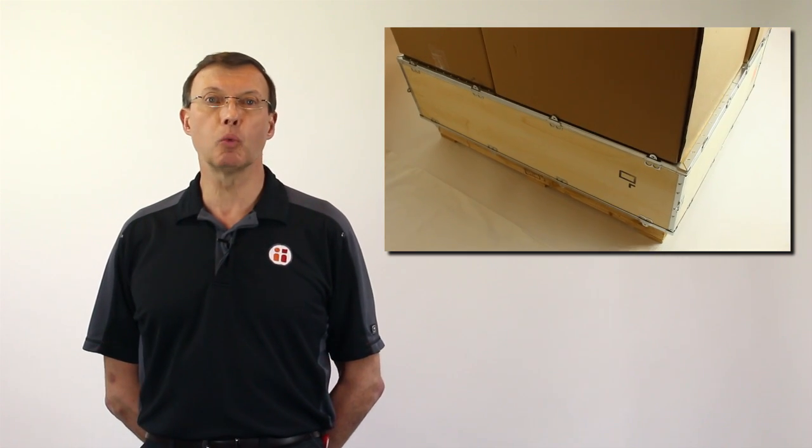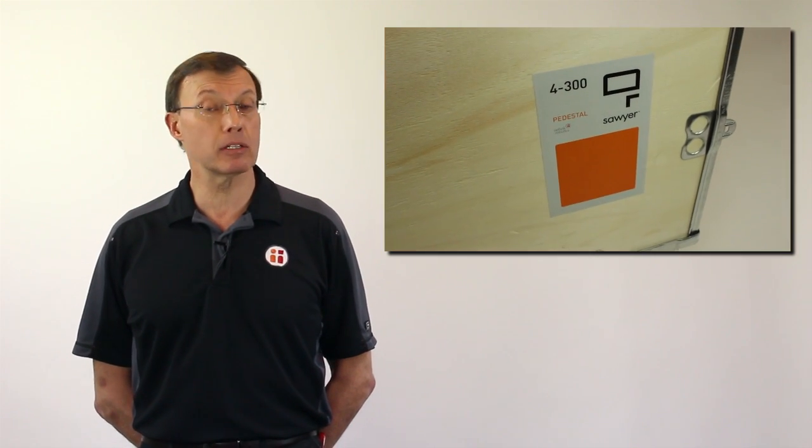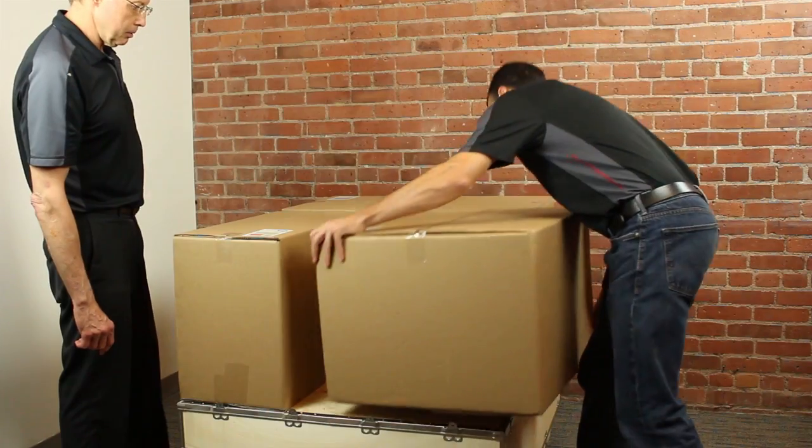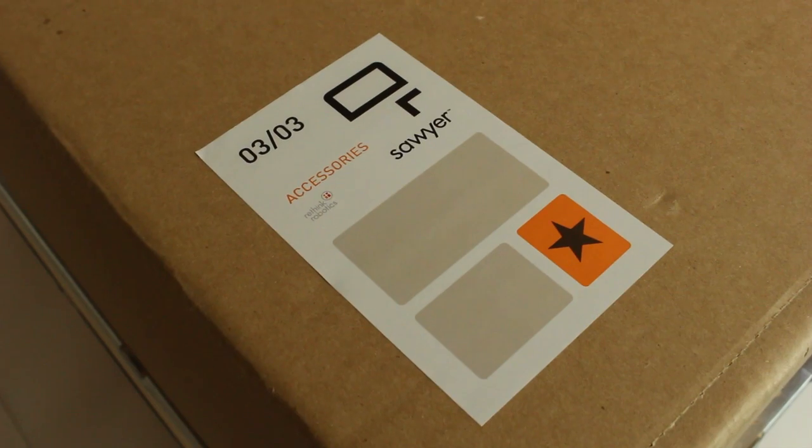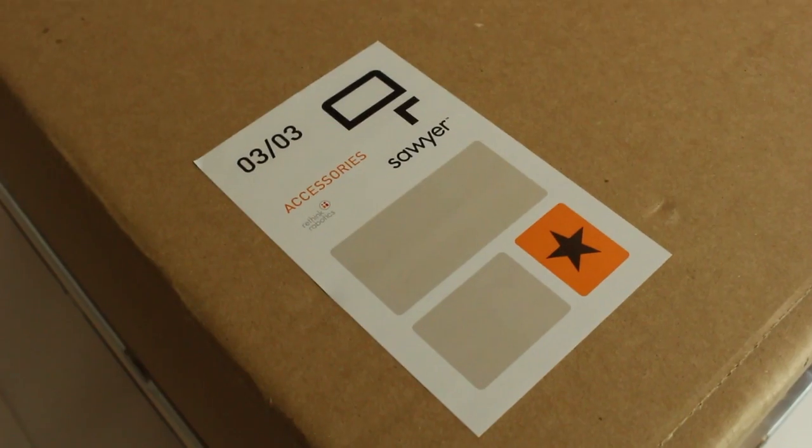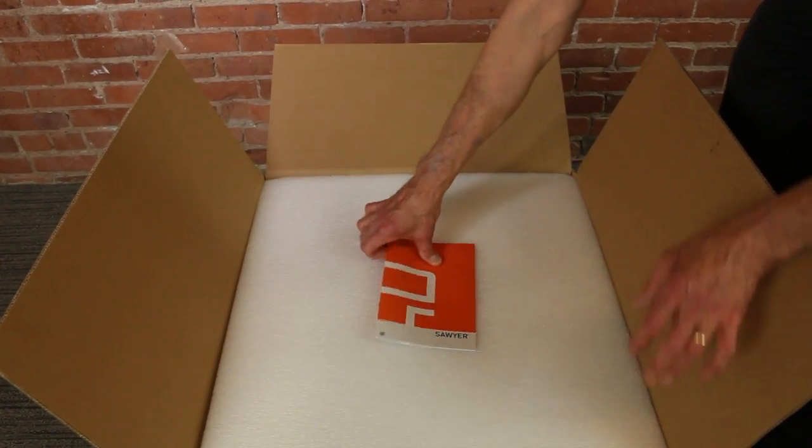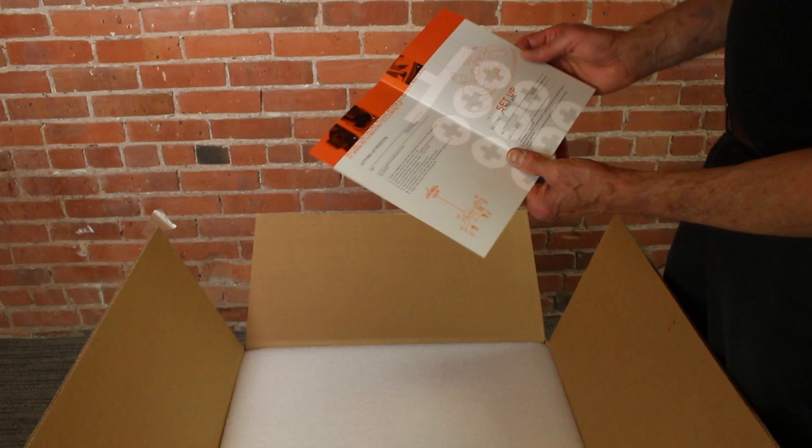Box four is a wooden crate and contains the pedestal if ordered. Open the star box first, which is box three that has the accessories, and you'll find the Sawyer setup guide.